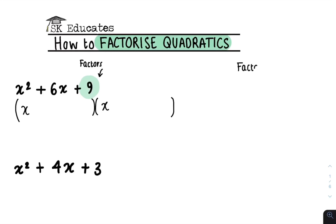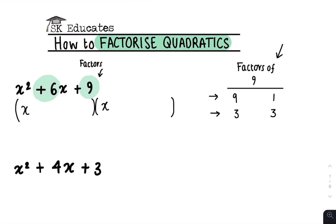So in this case, the factors of 9 are simply 9 and 1, or 3 and 3. You then look at this number, which is a plus 6, and using the factors that we just listed, we choose the pair that adds or subtracts from each other to give us this plus 6. 9 and 1 can't be added or subtracted to give you 6. But if we do 3 plus 3, this gives us 6. So this is the pair that we use, and we simply put a plus 3 here and a plus 3 here.